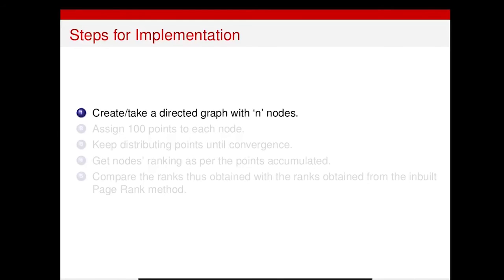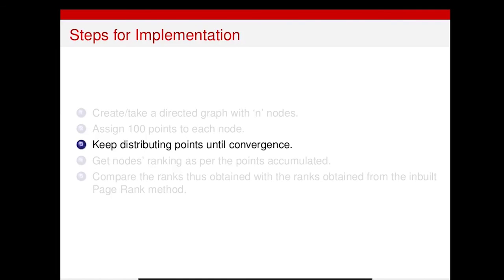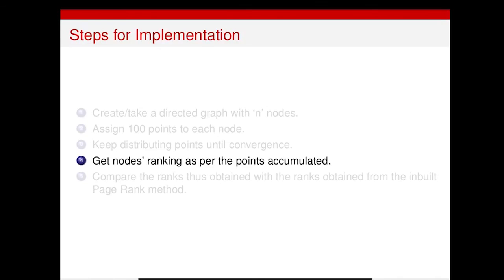As a first step, we are going to take a directed graph. For PageRank, it's better to use a directed graph because points are distributed based on outlinks. We will create the directed graph ourselves rather than using a NetworkX generator function. After that, we will assign 100 points to each node as initialization. Then every node will keep distributing its points to its neighbors, repeating until convergence — until the nodes' points stop changing. After that, we rank the nodes based on the points they have accumulated.